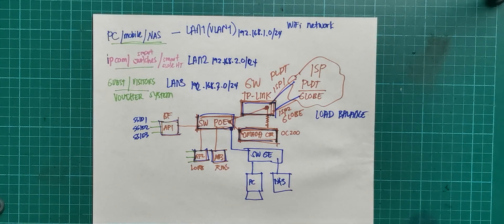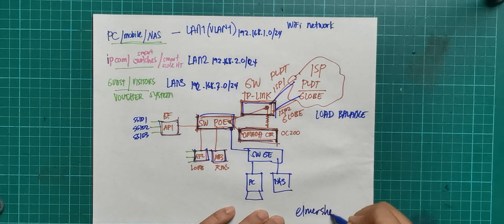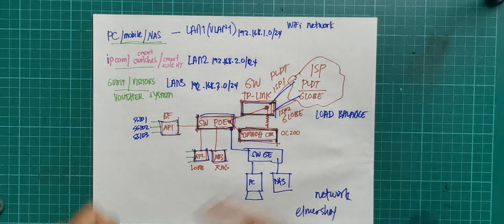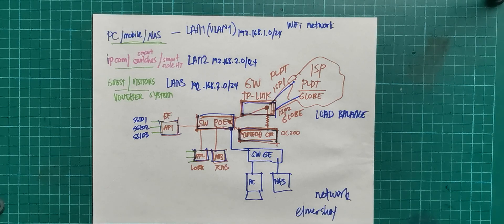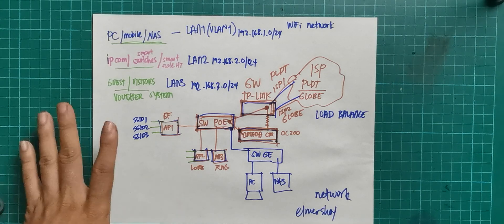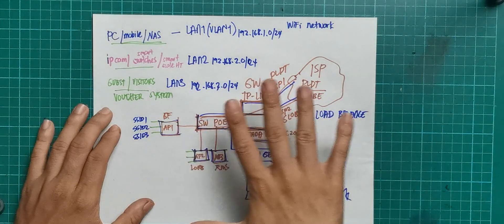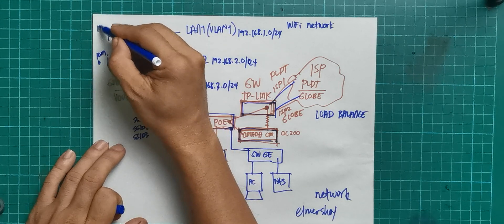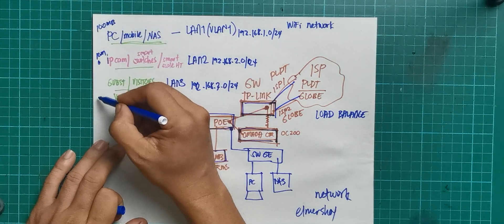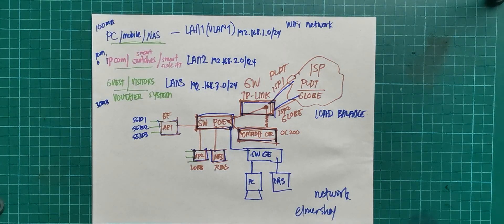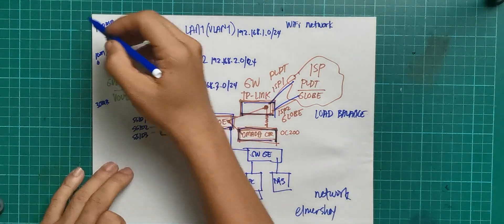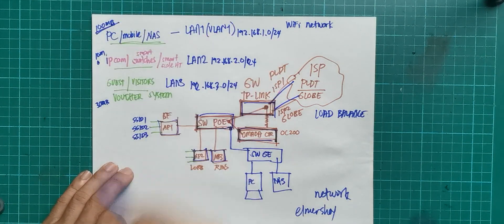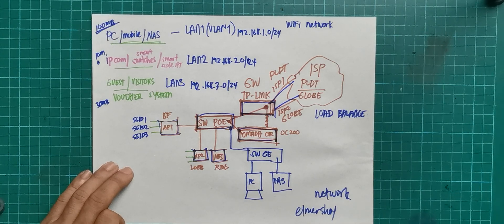That's the Elmer Shocks network setup. For bandwidth management: smart devices are limited to around 10 Mbps, the personal LAN gets 100 Mbps, and guests and visitors get 30 Mbps. Actually, I don't limit my personal LAN so I can maximize both ISP connections.